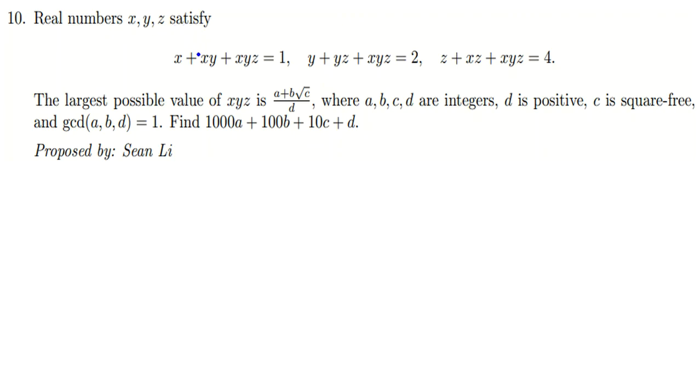Real numbers x, y, z satisfy x + xy + xyz = 1, y + yz + xyz = 2, z + xz + xyz = 4. The largest possible value of xyz is (a + b√c)/d where a, b, c, d are integers, d is positive, c is square-free, and gcd(a, b, d) = 1. Find 1000a + 100b + 10c + d.